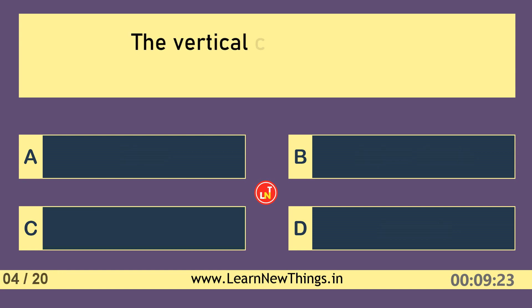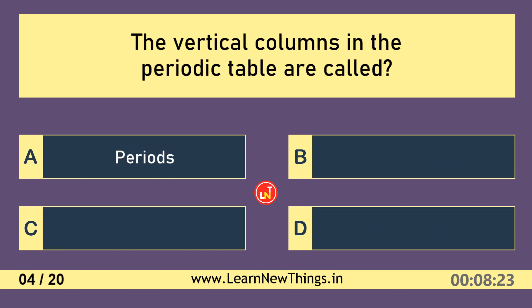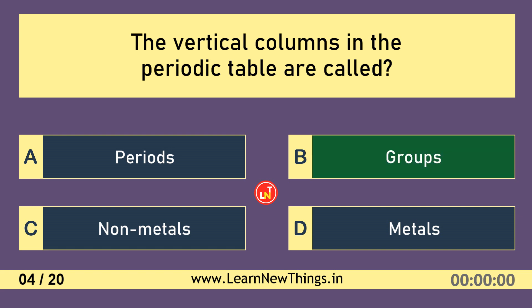Which one of the below is not a molecule? Aluminium. The vertical columns in the periodic table are called Groups.